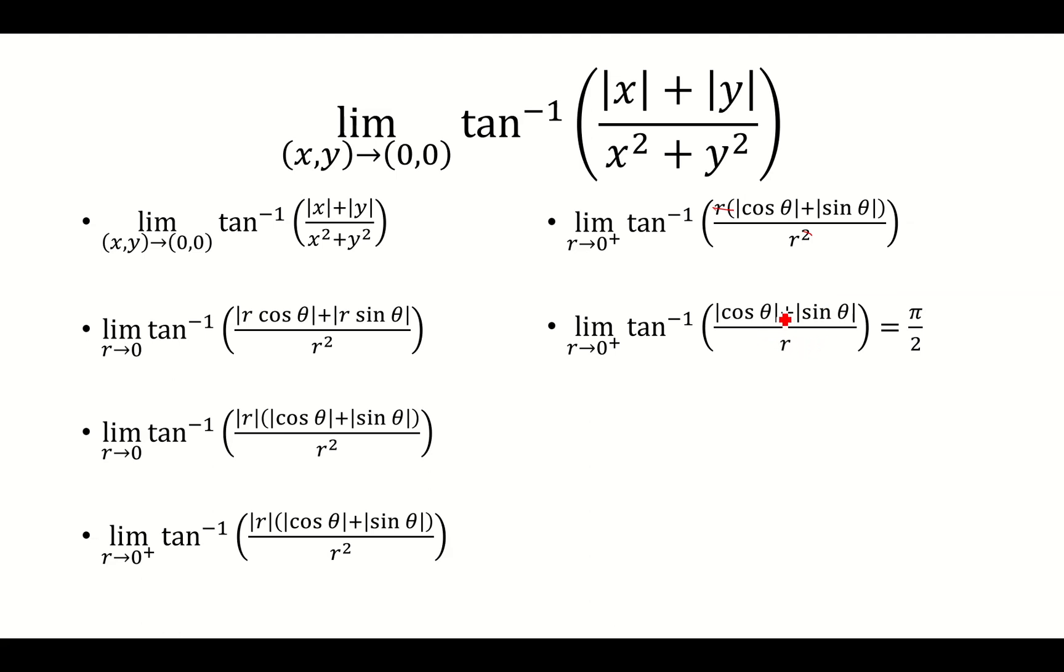So that's going to be cosine theta plus sine theta over r. Think of this as kind of like a constant over x. As we're approaching 0 from the right, that's going to go to positive infinity. So this whole inside goes to positive infinity.